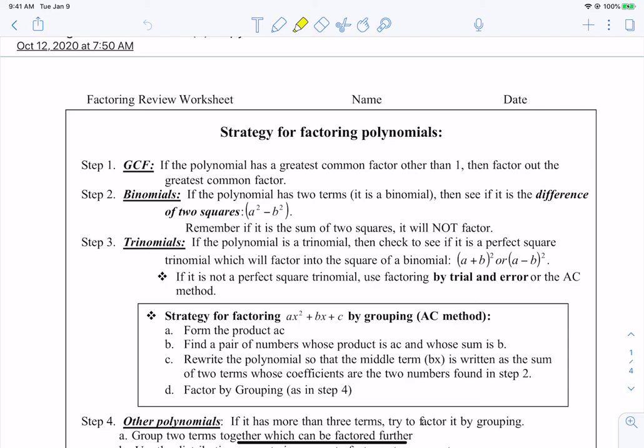Now the first thing you want to check anytime you have to factor is there a greatest common factor. So is there a factor that you can remove? Is there a number that divides into every term that you can divide out? Is there a variable that they have in common that you can take out? That's what they mean by a greatest common factor. Anytime you're asked to factor, that's the first thing you should check for.